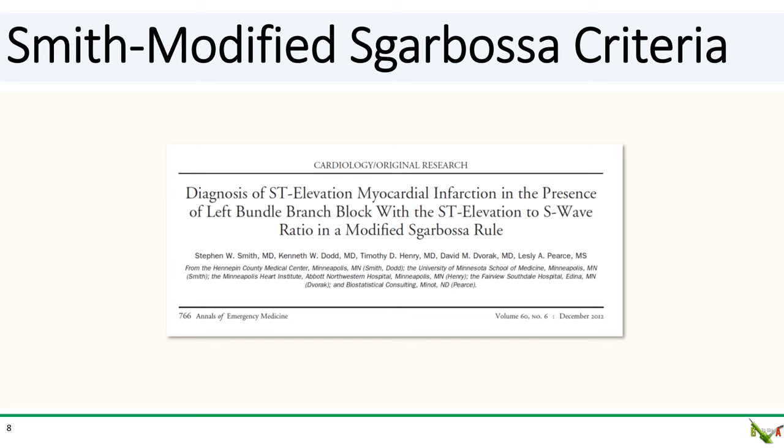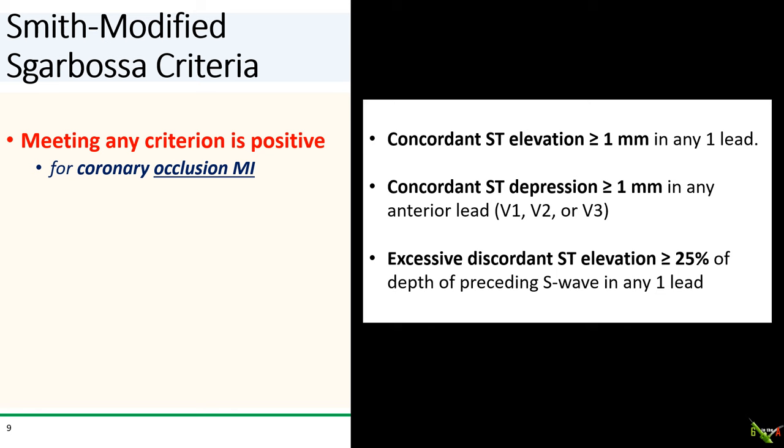In 2012, Stephen Smith and his colleagues published a modified Sgarbossa criteria in the Annals of Emergency Medicine. They looked to address the issue of low sensitivity in the original Sgarbossa paper, and also developed criteria to predict occlusion MI — a STEMI equivalent MI — rather than just enzyme-positive MI.